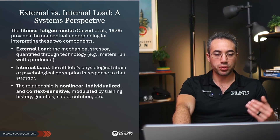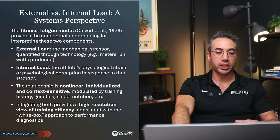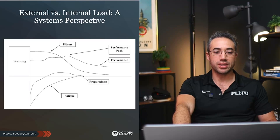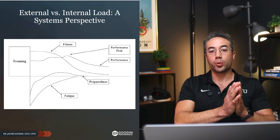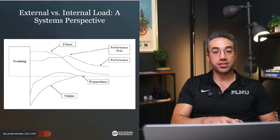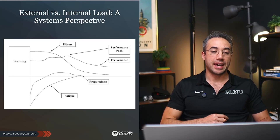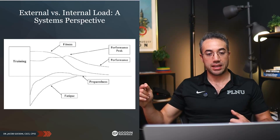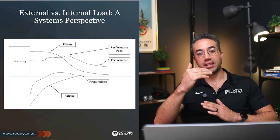Looking at the fitness-fatigue model: after training, fitness is very high but fatigue is also very high — shown on the negative y-axis. Thankfully, our organisms work such that fatigue dissipates faster than fitness dissipates. The time horizon for adaptation to actually improve performance is whenever fitness outweighs the fatigue, and the athlete is then more prepared for performance.